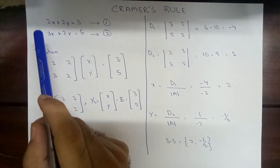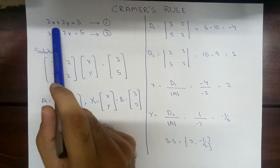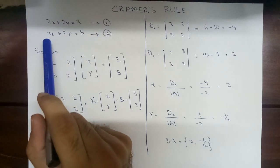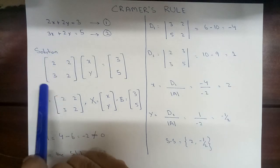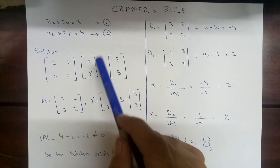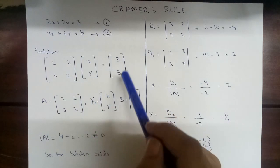We will take the coefficient of x that is 2, and the coefficient of y that is 2. In the same way, coefficient of x will be 3, the coefficient of y be 2. Here x, y is equal to 3 and 5.